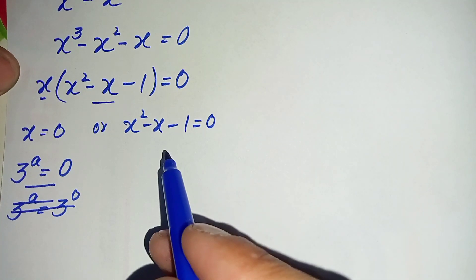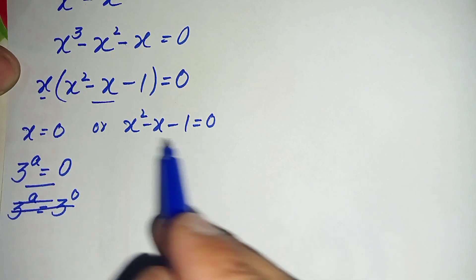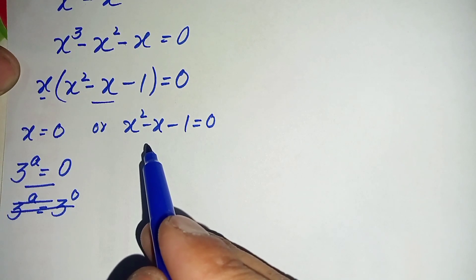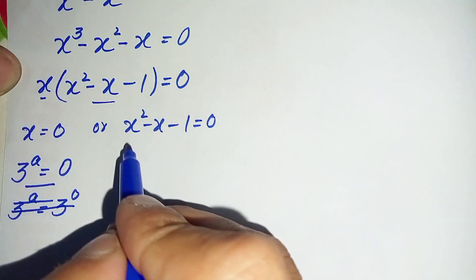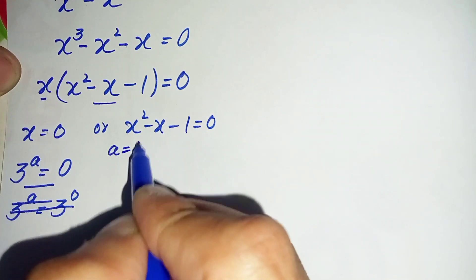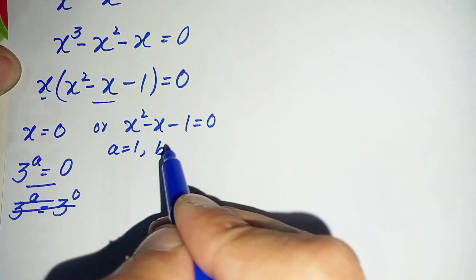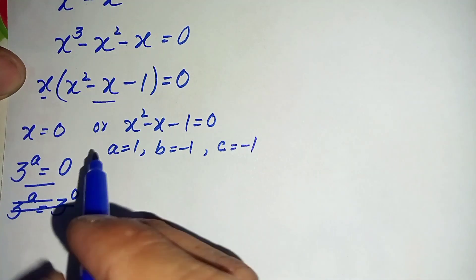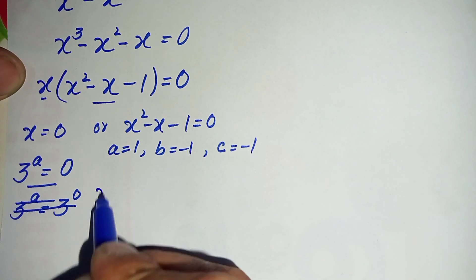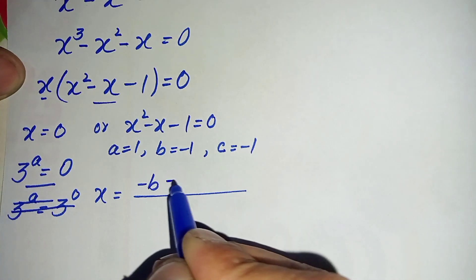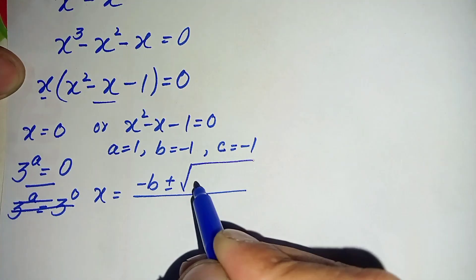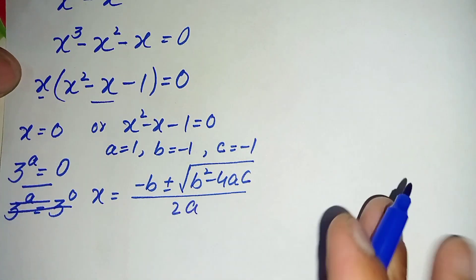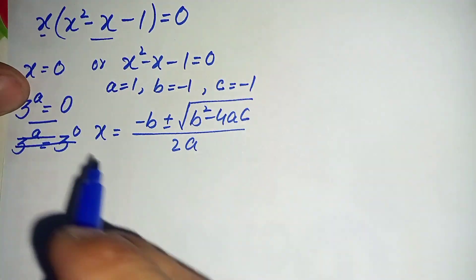Now we will solve the quadratic equation x squared minus x minus 1 equals 0. We cannot solve it by factorization, so we will use the quadratic formula to find the roots. The values are: a equals 1, b equals minus 1, and c equals minus 1. The quadratic formula is x equals minus b plus or minus square root of b squared minus 4ac, divided by 2a.